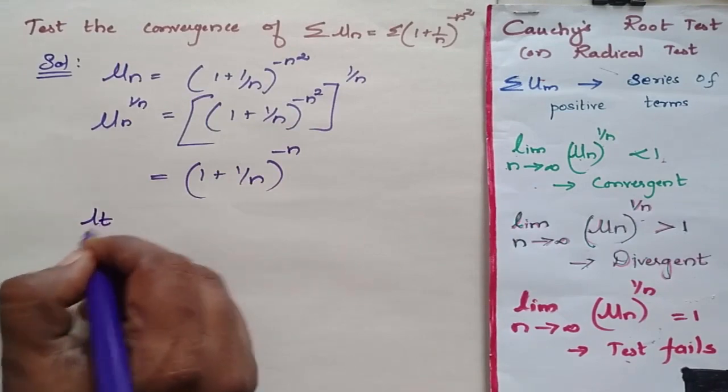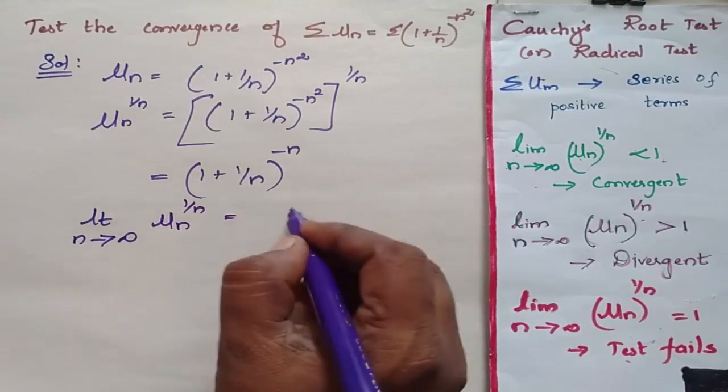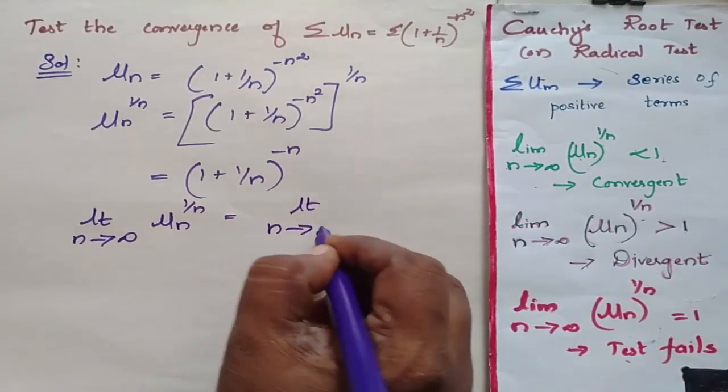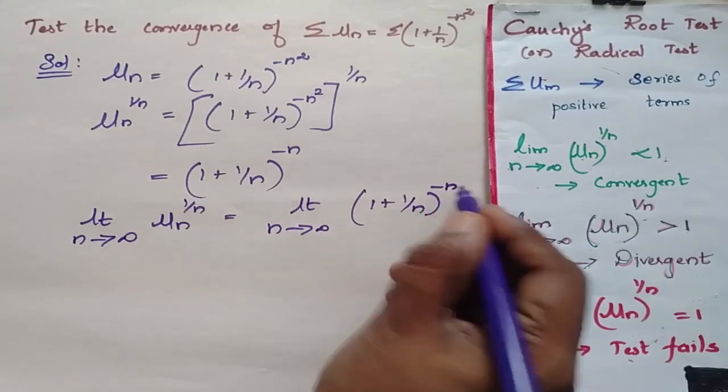Now I am going to substitute the limits. Limit n tending to infinity of un to the power 1 by n is equal to limit n tending to infinity of 1 plus 1 by n to the power minus n.